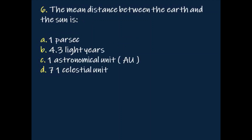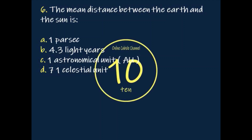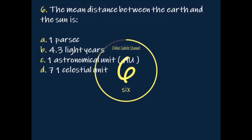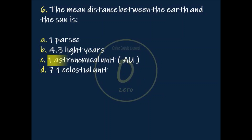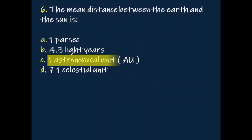Question: The mean distance between the Earth and the Sun is? Answer: One astronomical unit (AU).